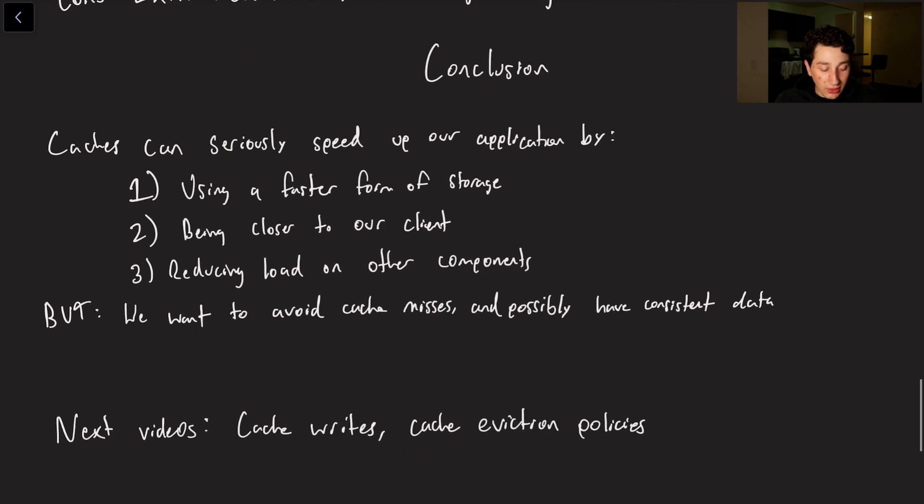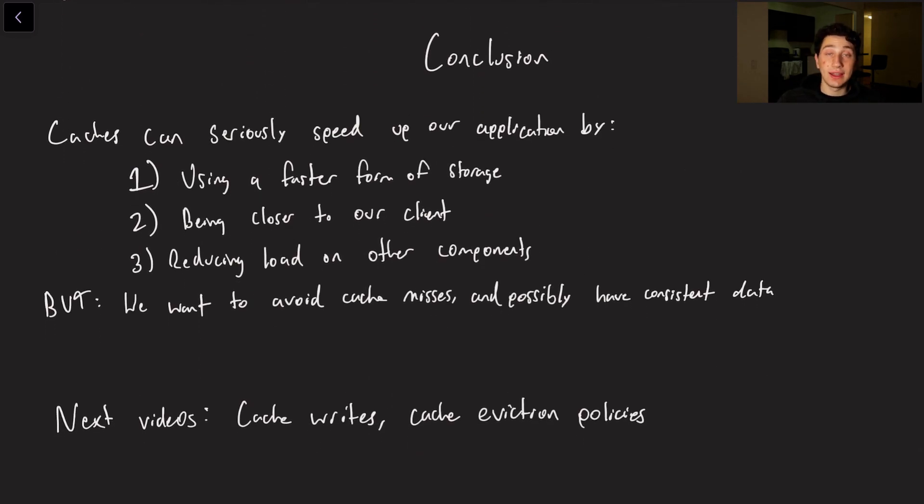So let's quickly do a conclusion so that I can go ahead and go to sleep. But basically caches are going to seriously allow us to get much better latencies within both of our reads and our writes. The reason being that typically they'll use a faster form of storage than the kind of naive disk implementation that we use with our databases. Additionally we can put them literally just closer to us, and that helps a lot speed things up.